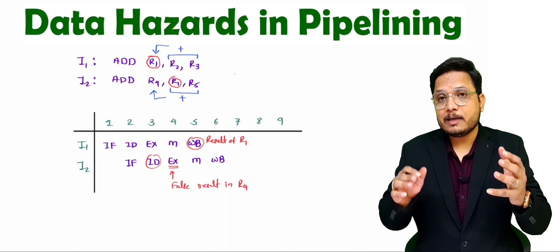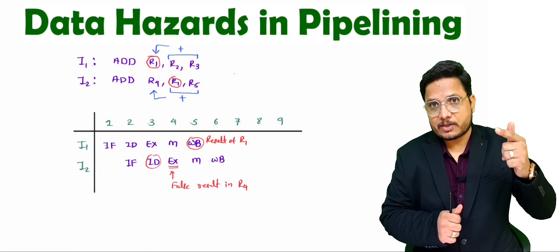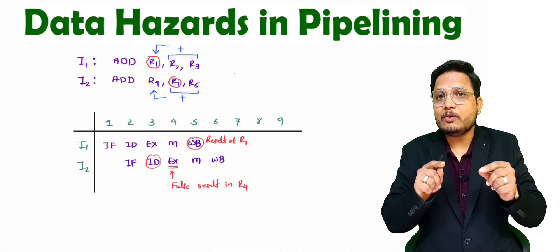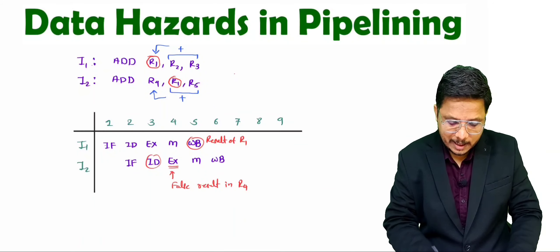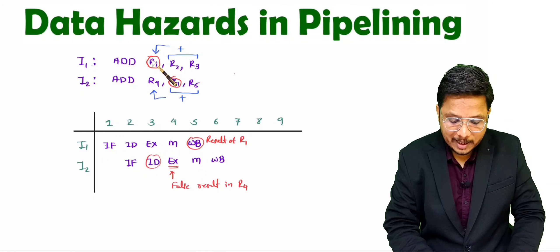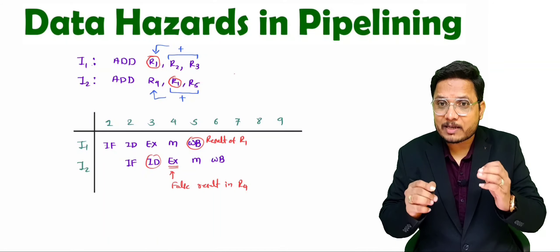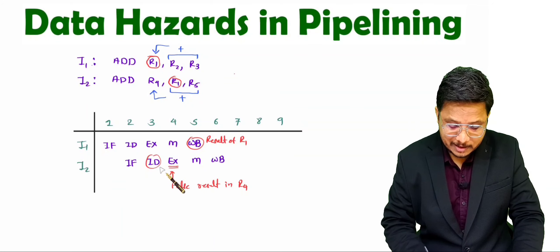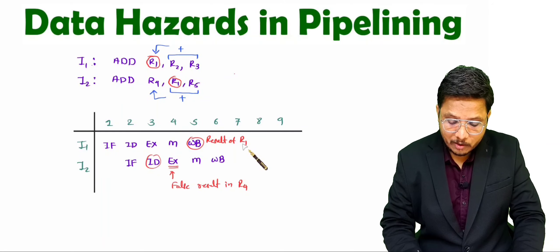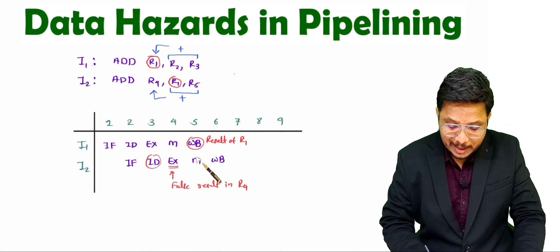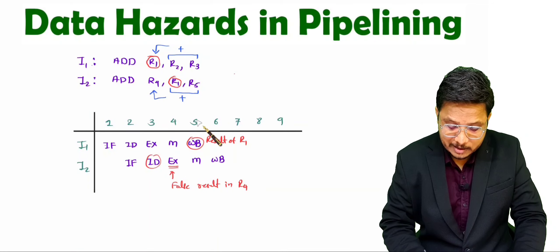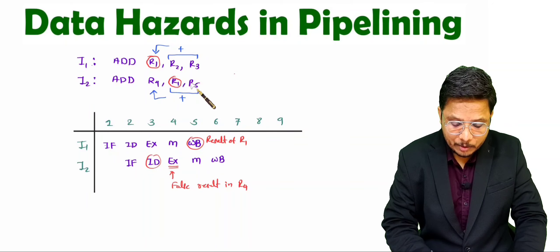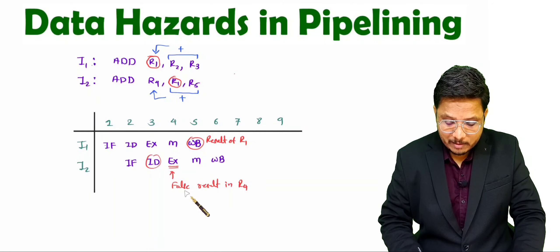The result depends on the previous instruction. R1 is modified by I1 — R2 plus R3 goes into R1 — but that only happens at the write-back stage, which is cycle 5. However, in the pipeline, I2's instruction decode stage loads the older value of R1, because the new value is only updated after instruction cycle 5. During instruction cycle 3 there will be the older value of R1 fed as input to the add instruction, so R4 will contain a false result.